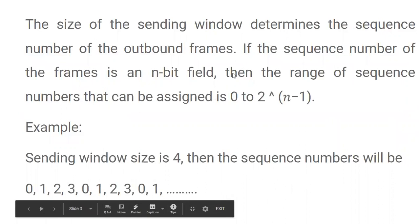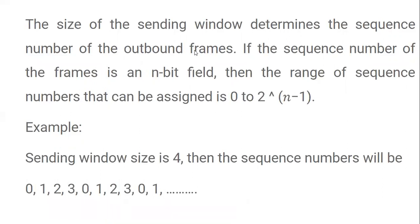The size of the sending window determines the sequence numbers of the outbound frames. If the frame size is known, the number of sequence numbers is also known. If there are n bits of frames, then the sequence numbers range from 0 to 2 to the power of n minus 1.